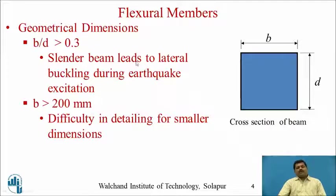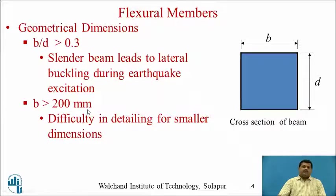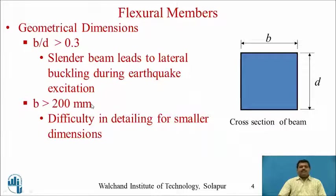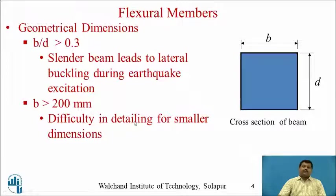The next geometric requirement is that the breadth of the beam must be a minimum of 200 mm. This is important because reinforcement detailing within the cross section of the beam requires at least 200 mm width — it is very difficult to detail reinforcement for smaller dimensions.